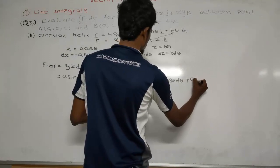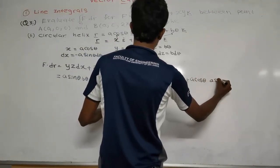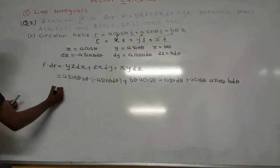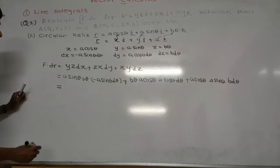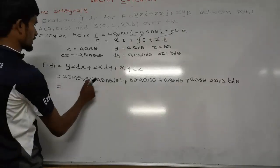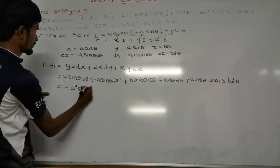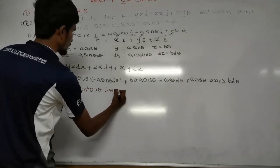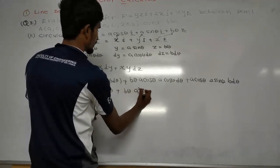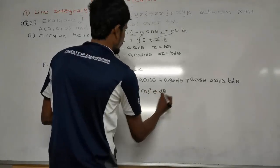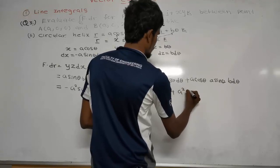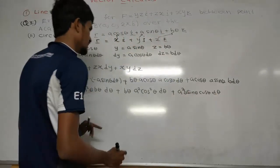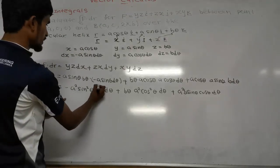x is equal to a cos theta, y is equal to a sin theta, z is equal to b d theta. This one will be equal to a sin theta, b theta, d theta, and d theta equal to b theta. So: a plus cos theta, a plus sin theta, a plus cos theta, a plus b theta. If we get to the start with A plus A plus B and B plus V theta.